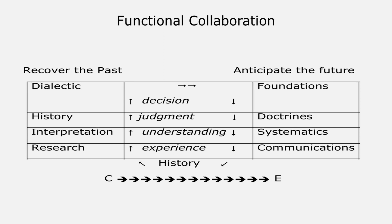Let's just look at the diagram now. I drew this up — it's a little different, but it's basically the solution that Lonergan came up with, and you'll all recognize the categories that are here. The ones in the middle represent the four levels of intentional consciousness: experience, understanding, judgment, and decision.